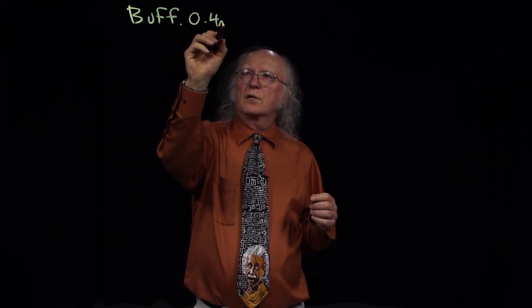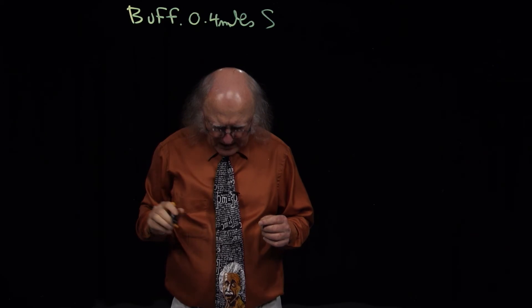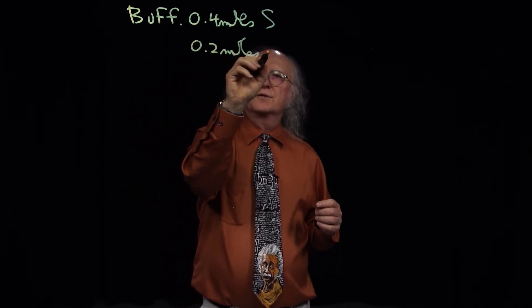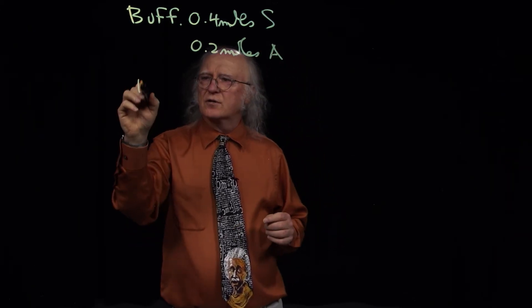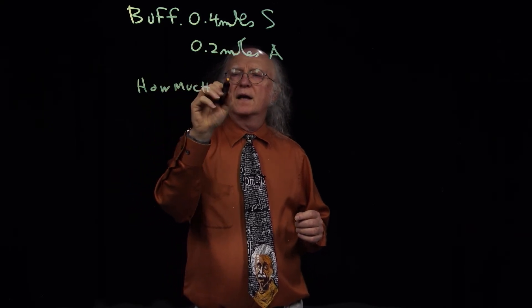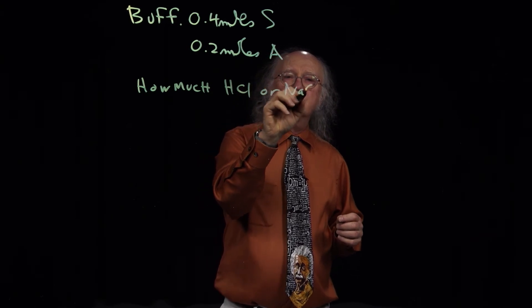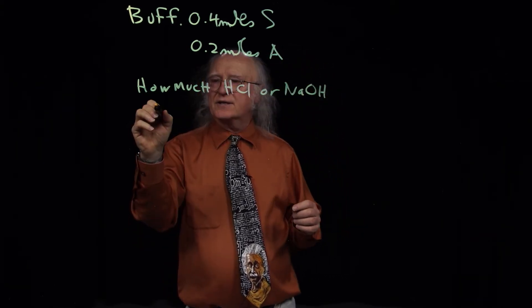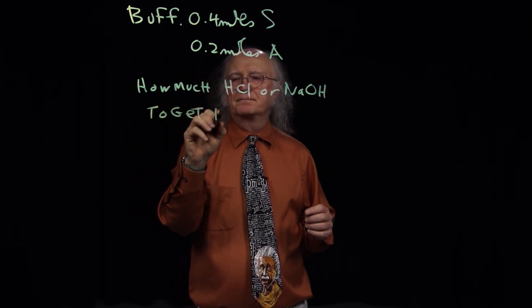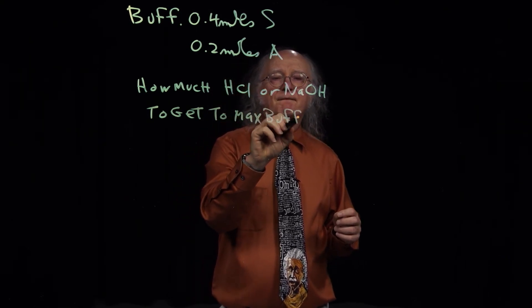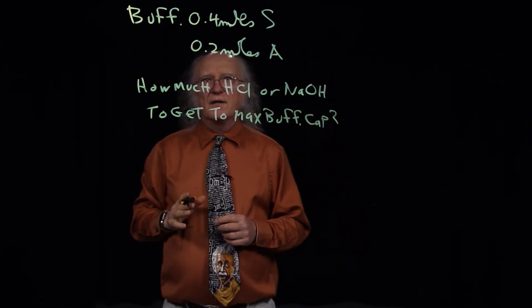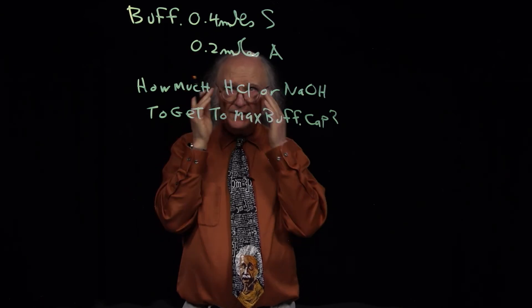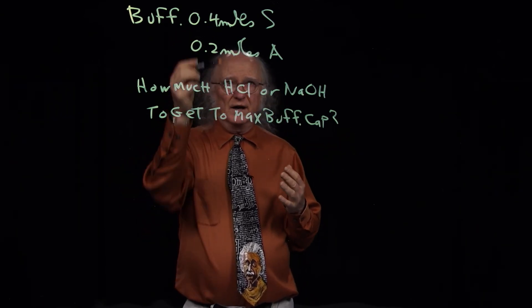For the last buffer problem, I have a buffer with 0.4 moles of salt and 0.2 moles of acid. The question is: how much HCl or NaOH would I have to add to get to maximum buffering capacity? We're not at maximum buffering capacity because we have more salt than acid.